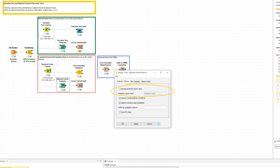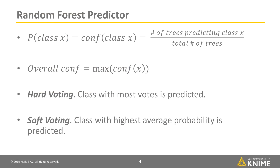The settings include an optional new name for the prediction column, the flag to append the prediction confidence and the single class probabilities, and whether to use the soft voting strategy. The individual class probabilities are calculated as the prediction confidence for each class — that is, the number of trees predicting the current class divided by the total number of trees.